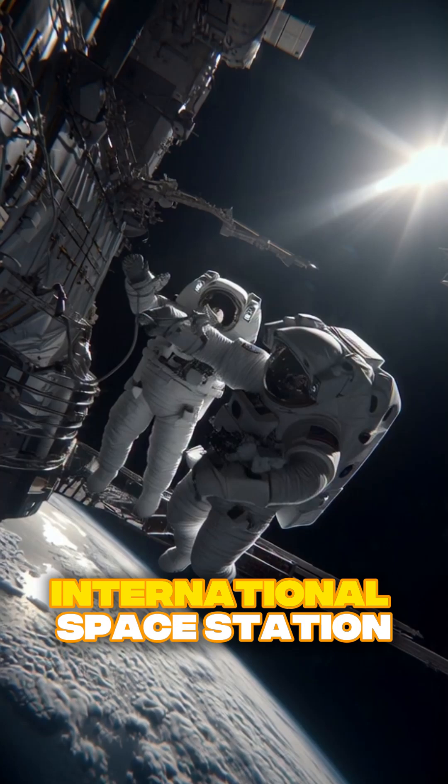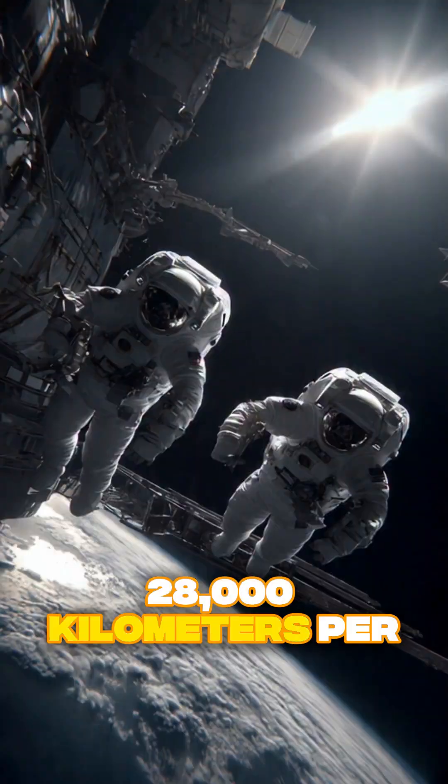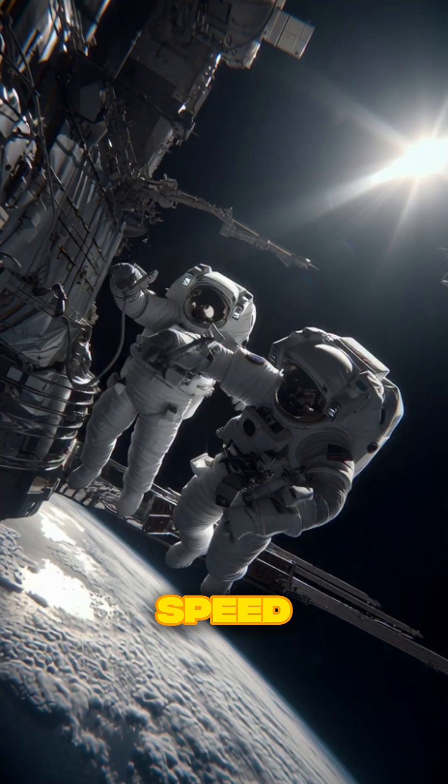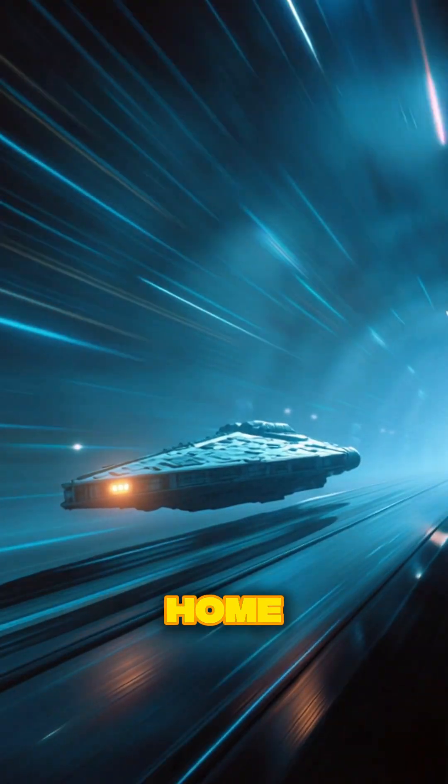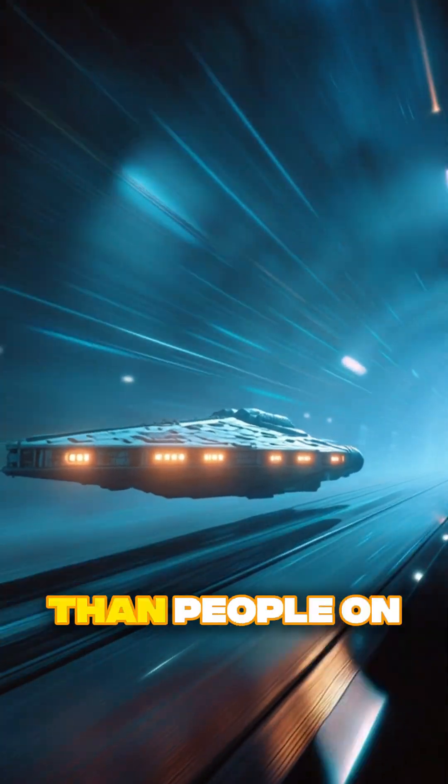Astronauts on the International Space Station orbit Earth at 28,000 kilometers per hour. Because of their speed, time actually moves slightly slower for them. When they return home, they've aged a tiny bit less than people on Earth.